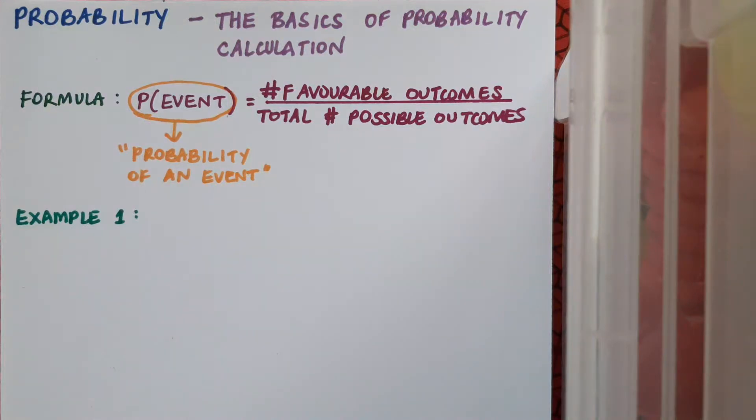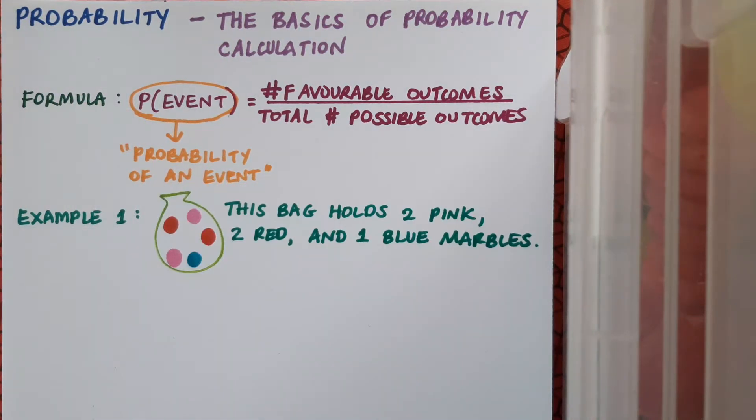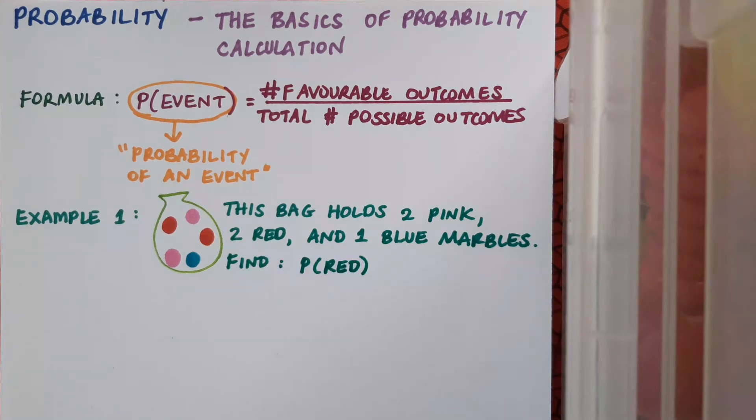So let's look at an example. This bag holds two pink, two red, and one blue marbles, and we want to find the probability of randomly selecting a red marble from the bag.